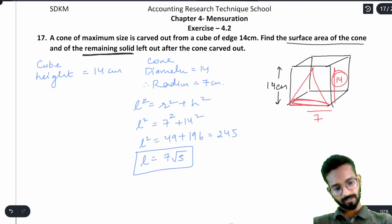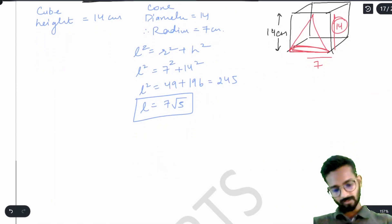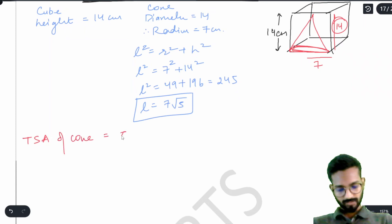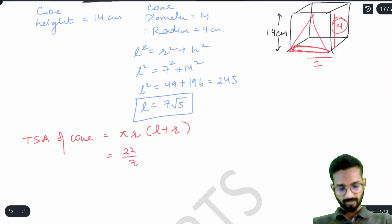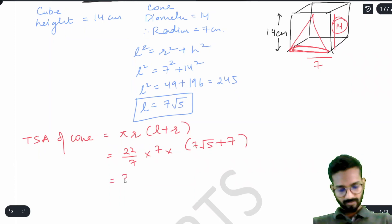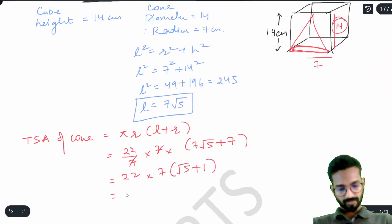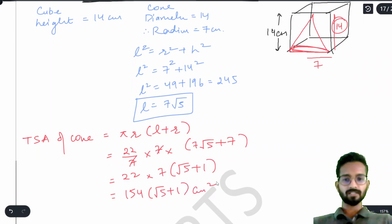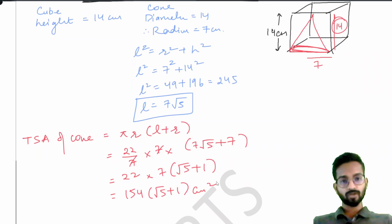Total surface area of the cone = π r (l + r). Using π = 22/7, radius = 7, l = 7√5: (22/7) × 7 × (7√5 + 7) = 22 × 7 × (√5 + 1) = 154(√5 + 1) cm². This is the surface area of the cone.